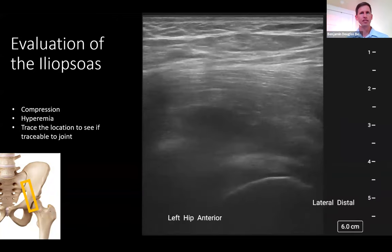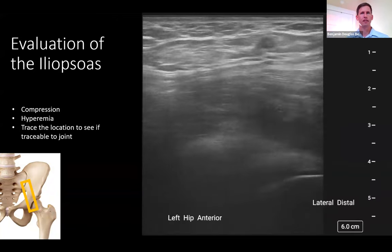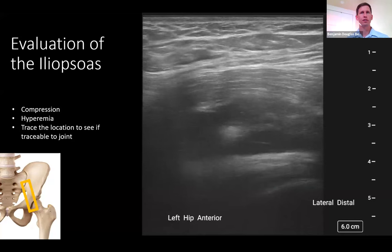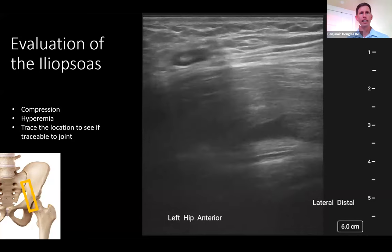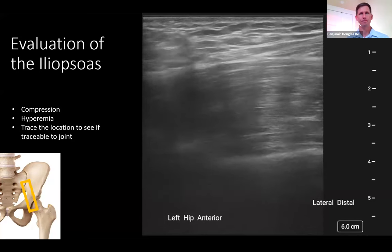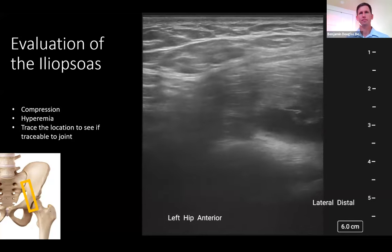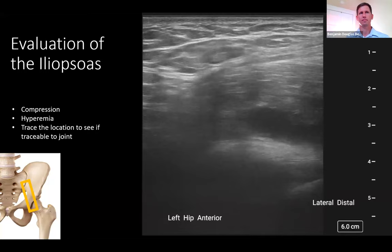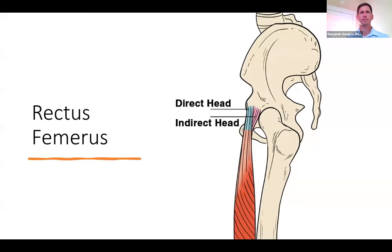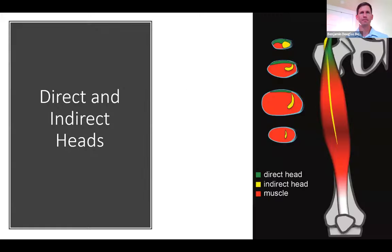This final image is the video of the long axis. After completing the evaluation of the iliopsoas muscle and bursa, we'll move on to the rectus femoris.